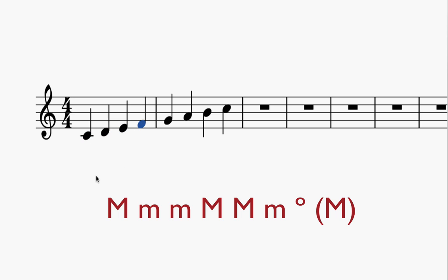And if we count up the pattern, it is major, minor, minor, major is the fourth one. So the fourth chord quality in our diatonic chord progression is major.